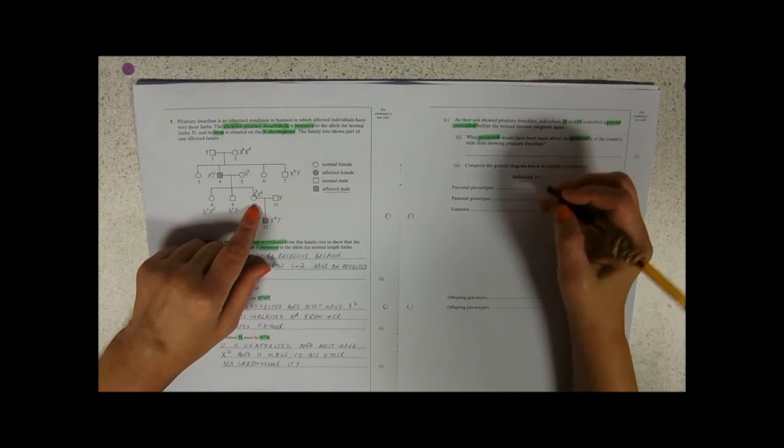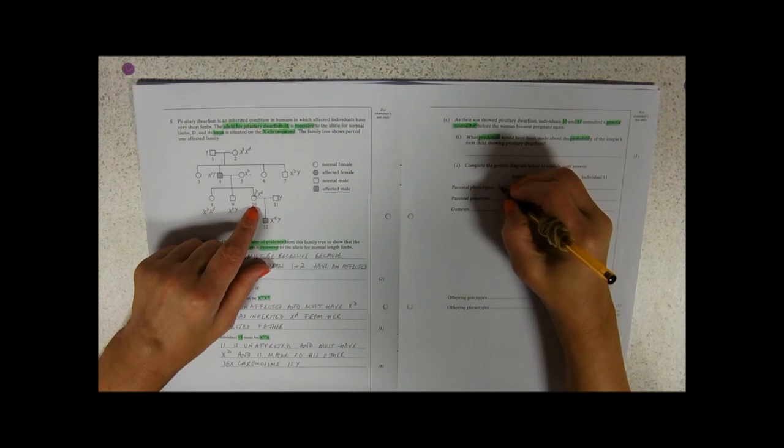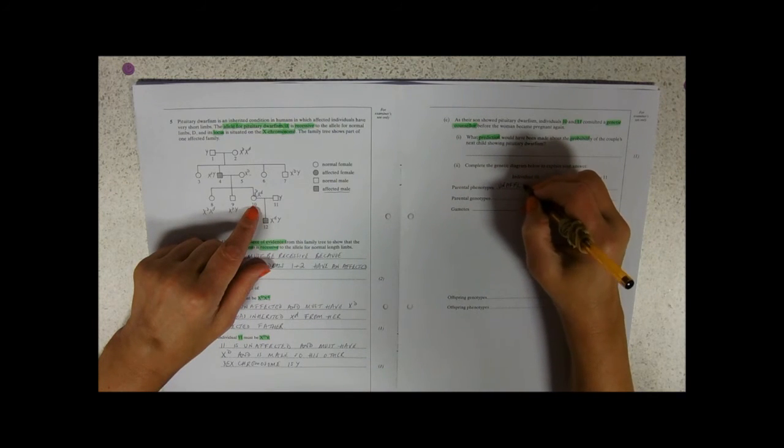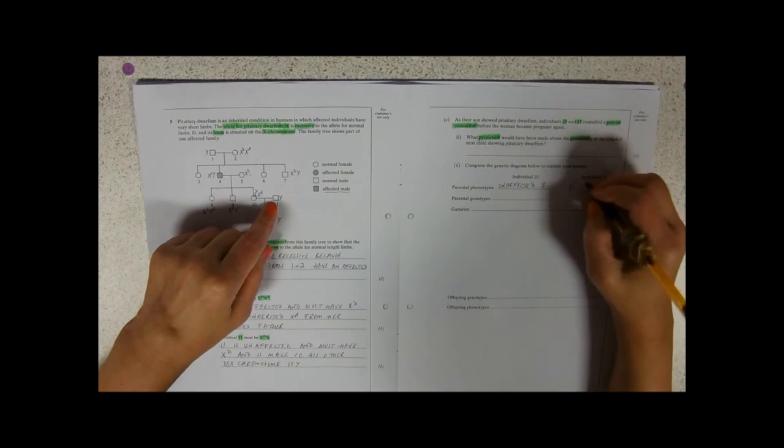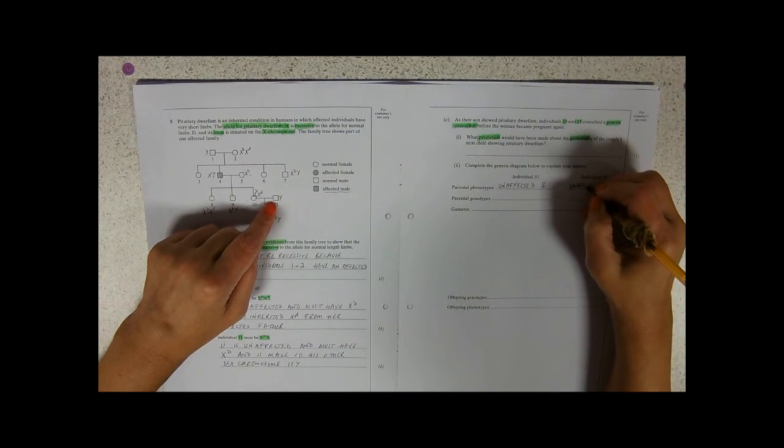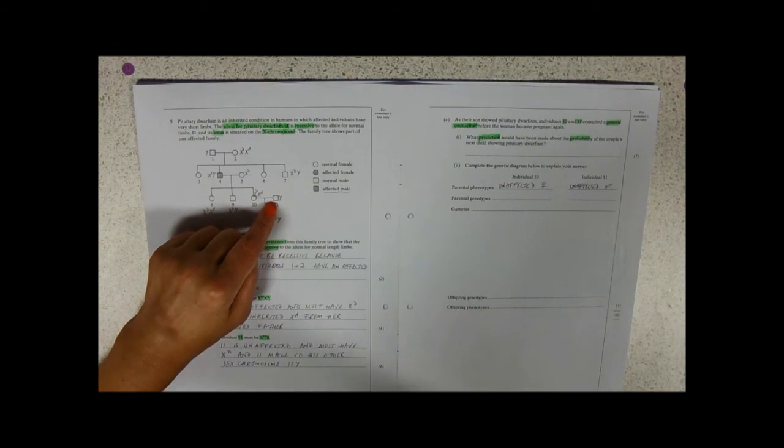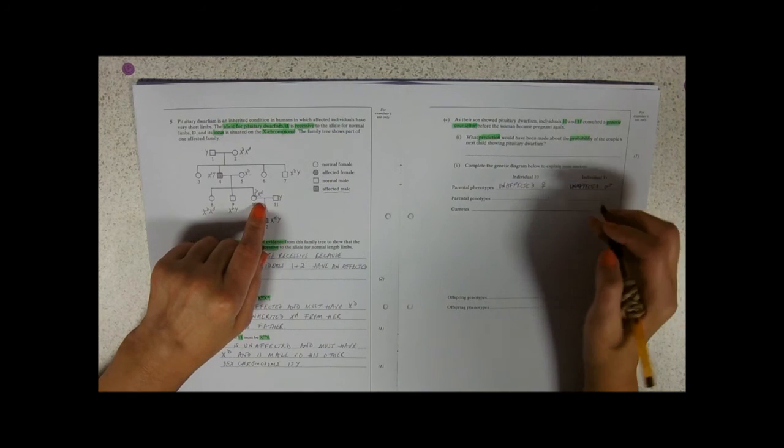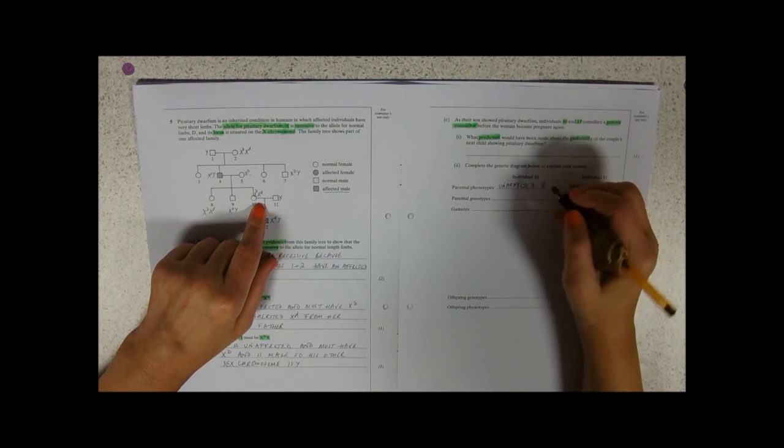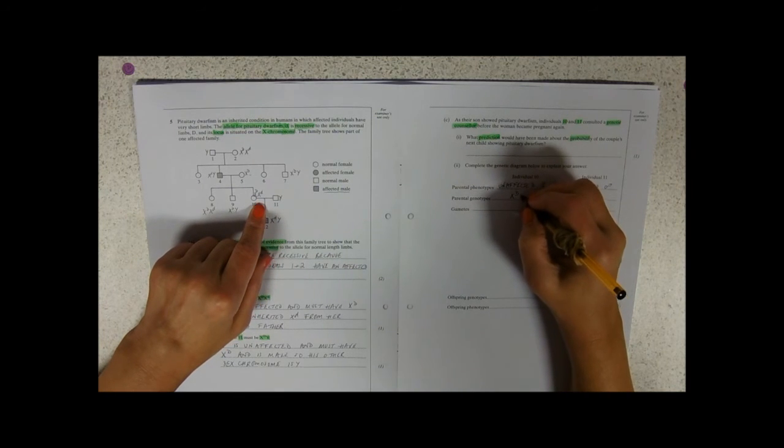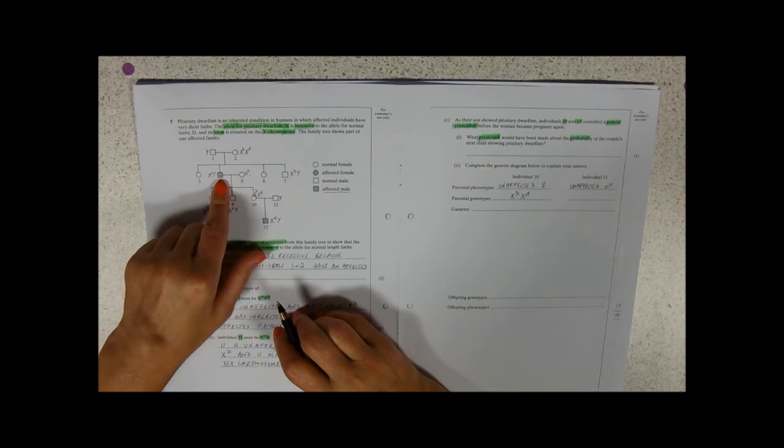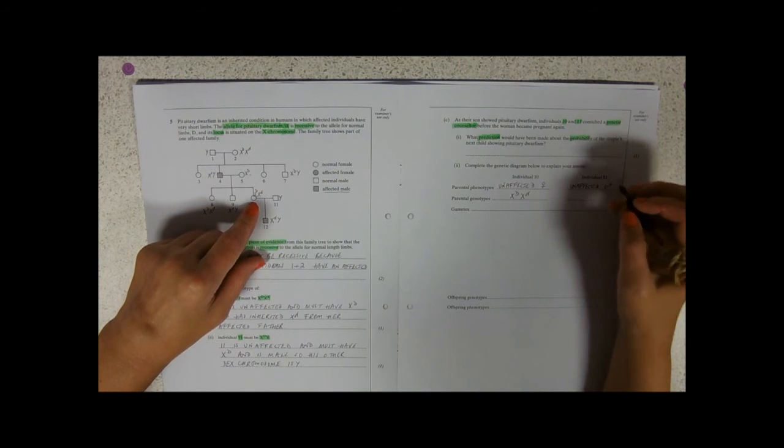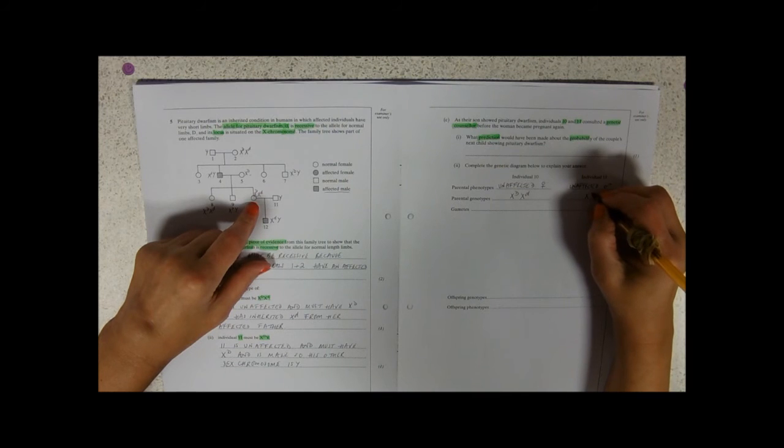So parental phenotypes. Individual 10 is an unaffected female. And individual 11 is an unaffected male. So parental genotypes, you could write female or male in there, I'm just a bit lazy today. Individual 10, we know that her genotype is X big D, X little d. Not only because we've been told it down here, but because we've managed to work it out because she's got an affected father, and therefore must have one of those. And of course father 11, unaffected, big D and Y.